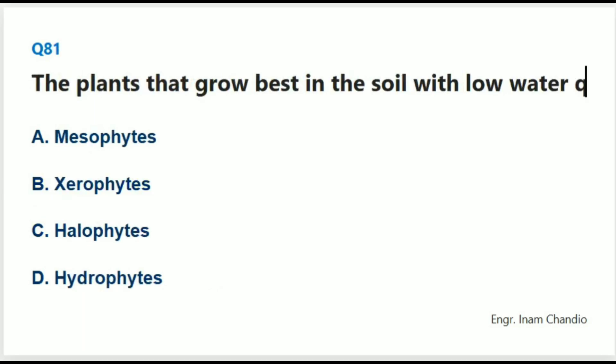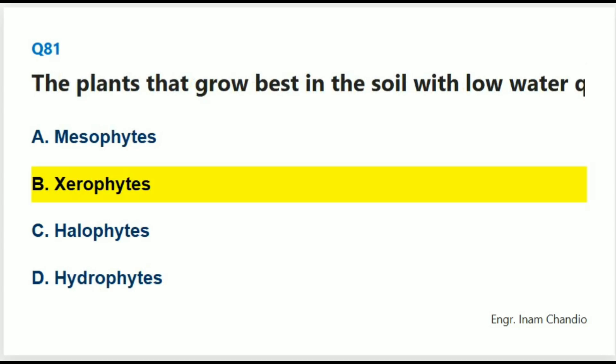The plants that grow best in soil with low water quantity are: The correct answer is B. Xerophytes.